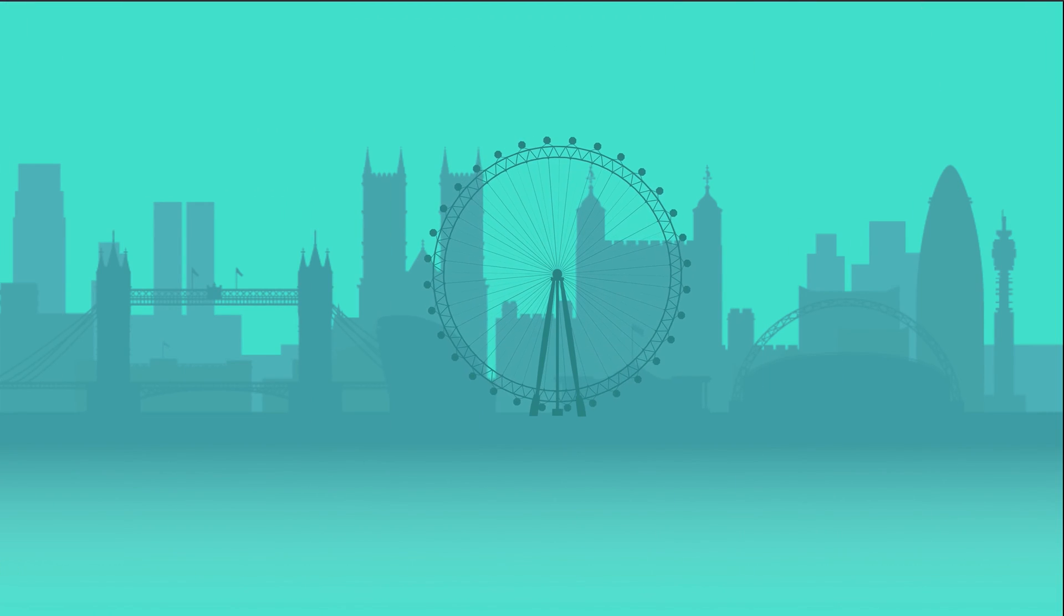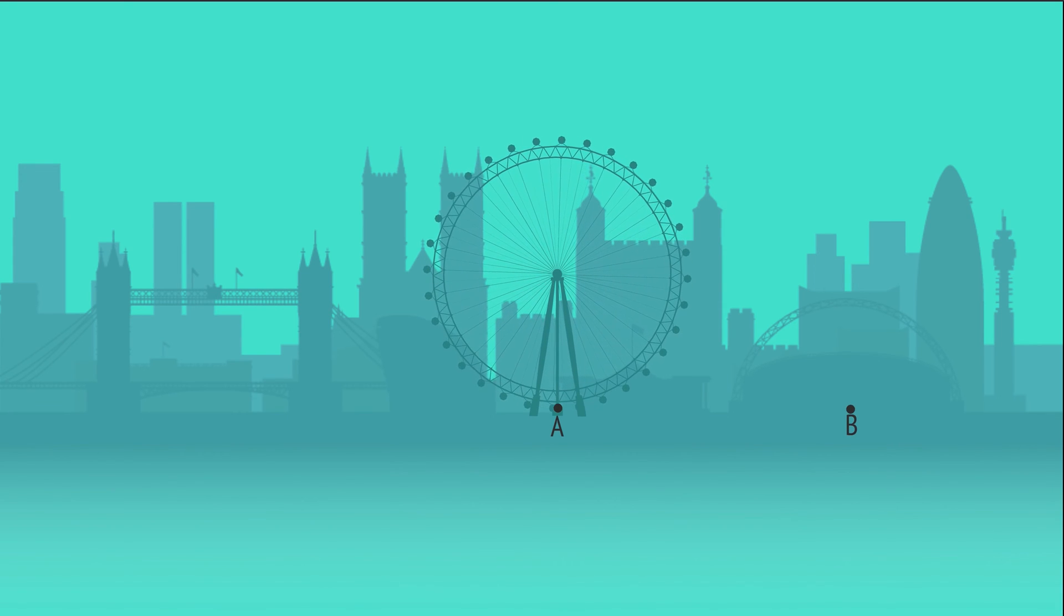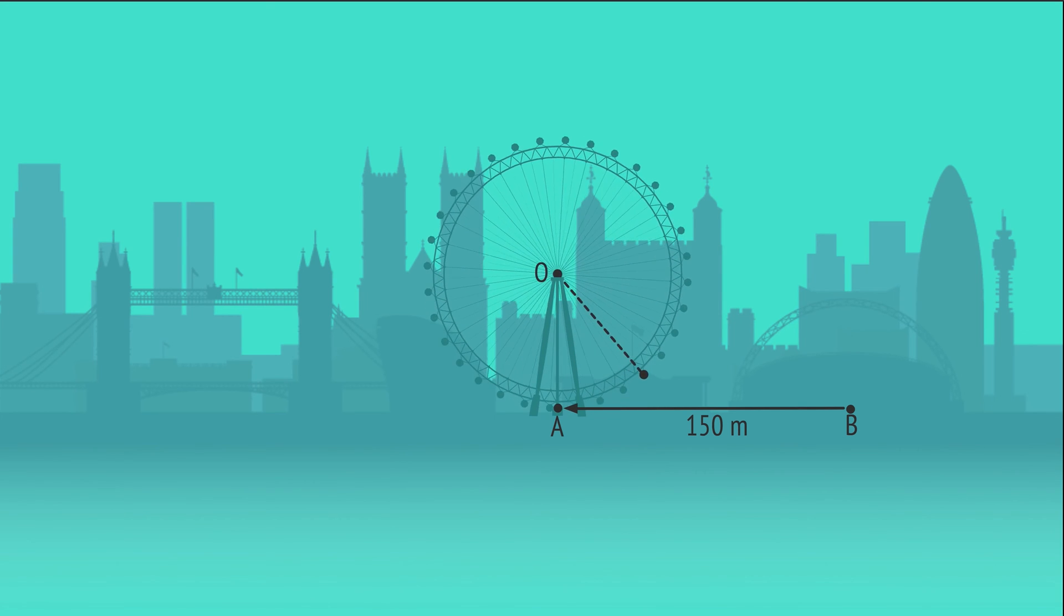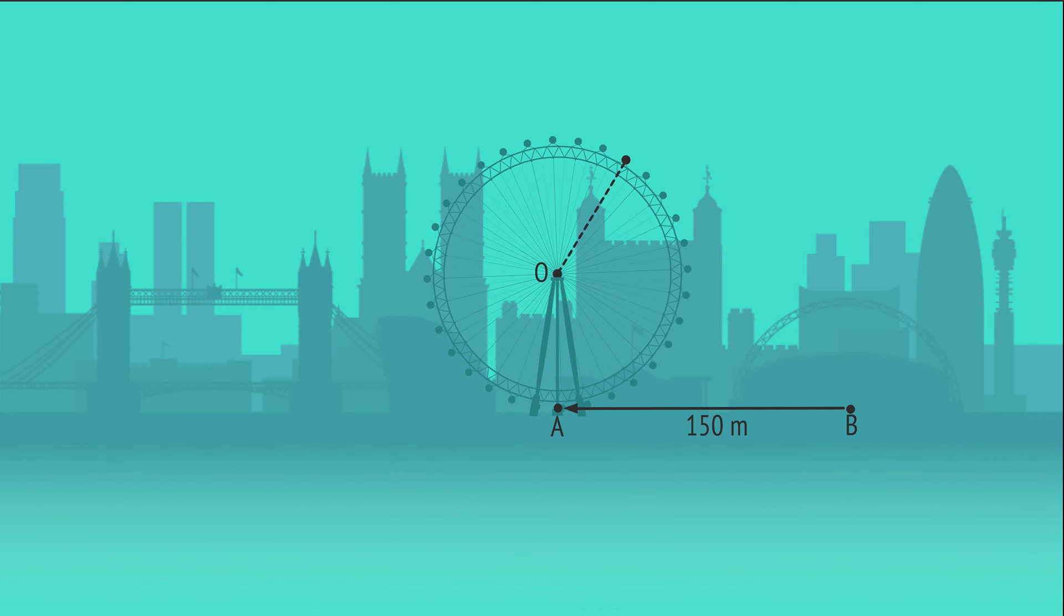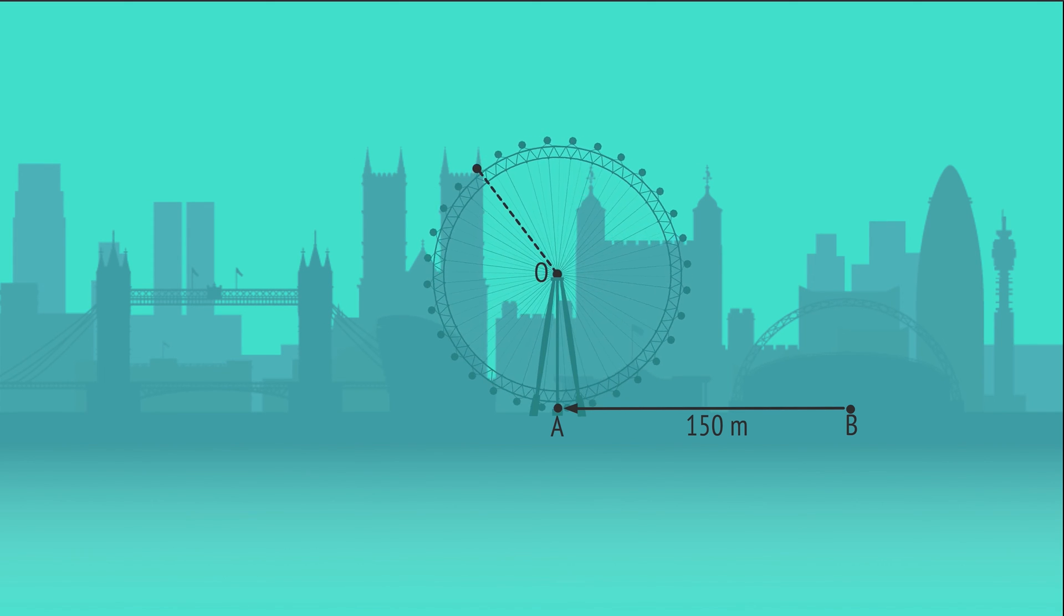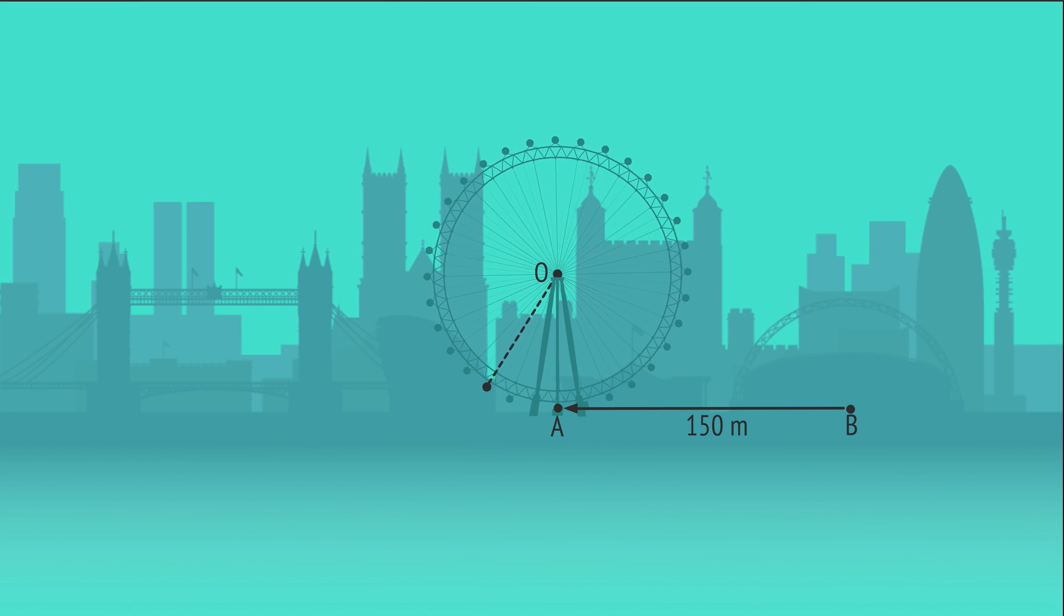A city observation wheel has passenger capsules on the wheel's circumference. A passenger enters a capsule at point A, while a friend stands at point B, 150 meters away. As the wheel rotates, the passenger follows a circular path with a 67 meter radius. How can we calculate the minimum distance between the passenger and their friend during one complete rotation?